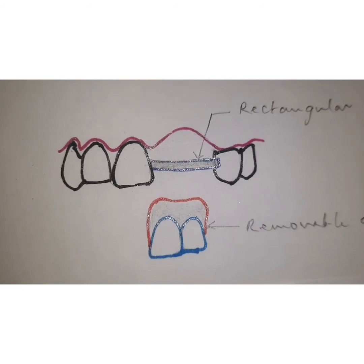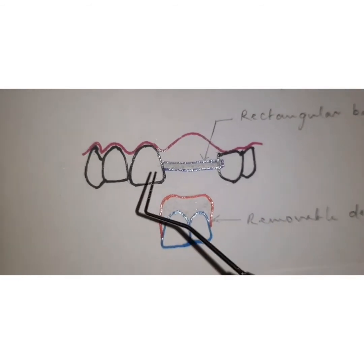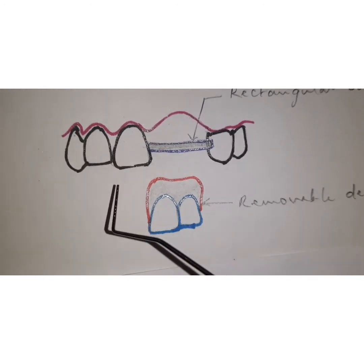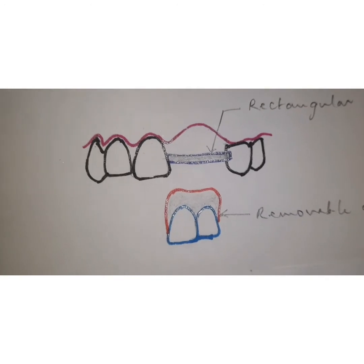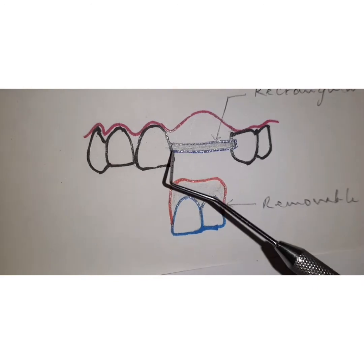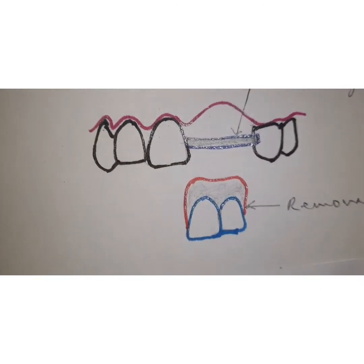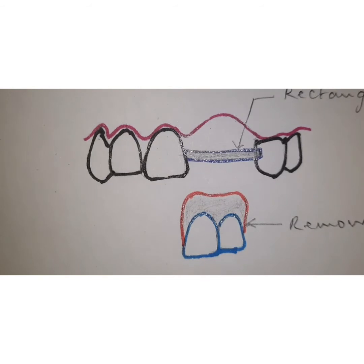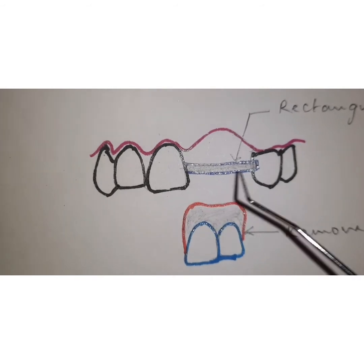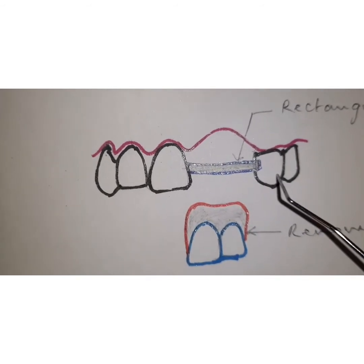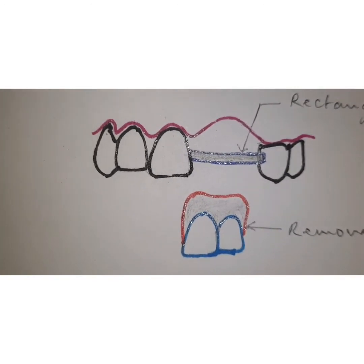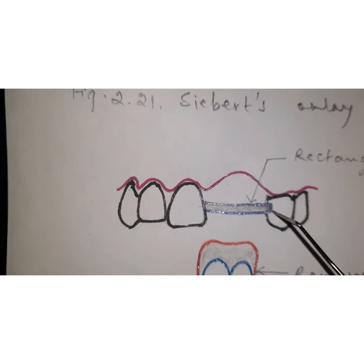First, you are going to prepare the abutment teeth, take an impression, and on the die you are going to make a wax pattern of the coping with a rectangular bar following the contour of the ridge. Once this wax pattern is casted, you are going to do firing with porcelain on the abutment teeth.